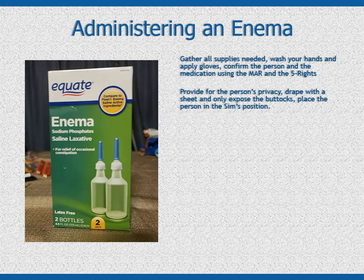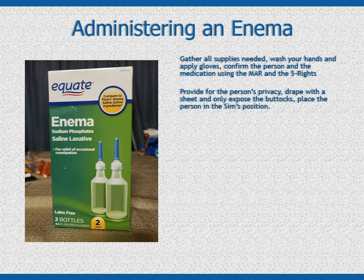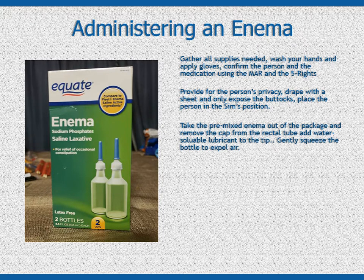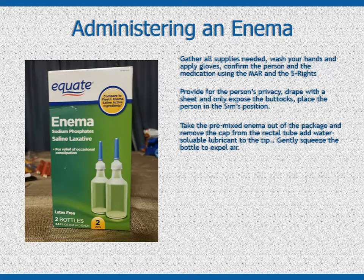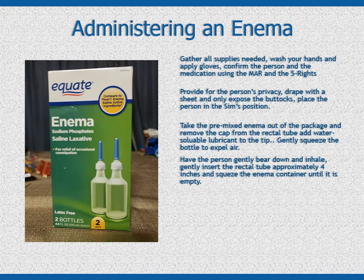Cover the person with a sheet for privacy and have them lower their pants and undergarments. Assist if needed, and only expose the buttocks. Place the person on their left side with their left leg straight. The right leg should be bent at the knee and moved toward the upper part of the body. This is called the SIMS position. Remove the premixed enema from the package. Remove the cap from the rectal tube and add additional water-soluble lubricant to the tip of the rectal tube. Gently squeeze the enema container to expel air. Using your non-dominant hand, lift the person's upper buttock to expose the anus. Have the person take several deep breaths and gently bear down like they are having a bowel movement. This will help relax the anal sphincter and reduce anxiety and discomfort during the insertion of the rectal tube.